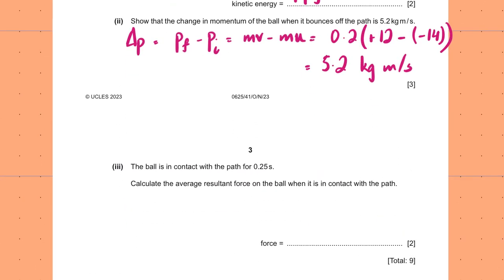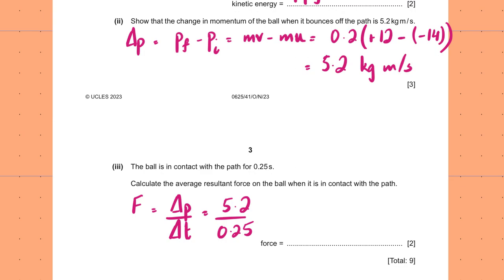The ball is in contact with the path for 0.25 seconds. Calculate the average resultant force on the ball when it is in contact with the path. Force is the rate of change of momentum, so 5.2 divided by 0.25 — that's change in momentum divided by the time during which it happened. So 5.2 ÷ 0.25 = 20.8 N, or to 2 SF you can write 21 N.